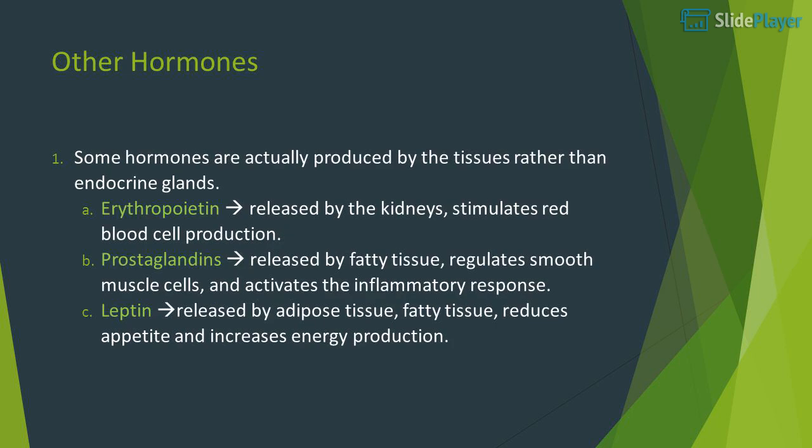Other hormones: some hormones are actually produced by tissues rather than endocrine glands. Erythropoietin is released by the kidneys and stimulates red blood cell production. Prostaglandins are released by fatty tissue, regulating smooth muscle cells and activating the inflammatory response. Leptin is released by adipose tissue and reduces appetite while increasing energy production.